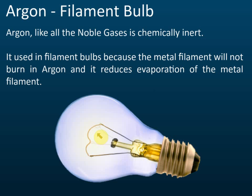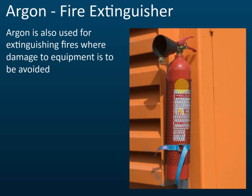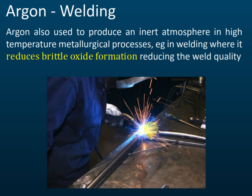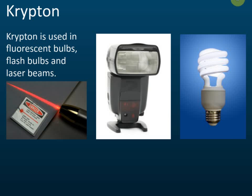Some bulbs just have colored glass with filaments still inside — those still use argon. Argon is also used in fire extinguishers to avoid damage to equipment, and in welding, because the high temperature in welding can cause the formation of brittle oxides, which argon helps prevent.